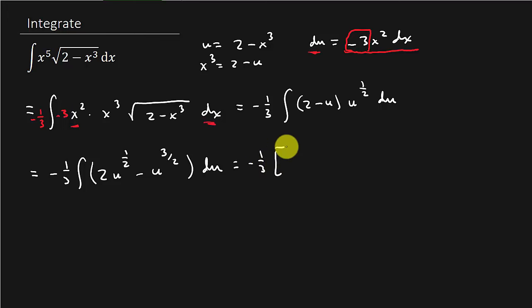So that's negative 1 third times, so that's going to be 2 times u to the 3 halves times 2 thirds. Add 1, multiply by the reciprocal of the other one. And then that's going to be u to the 5 halves, then multiply this by 2 fifths. And that's going to be plus c. And so I'm going to get negative 4 over 9 u to the 3 halves plus that's going to be 2 over 15 u to the 5 halves plus c.